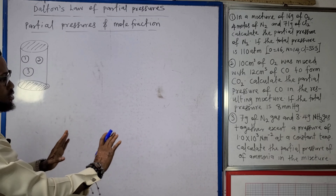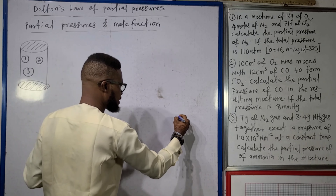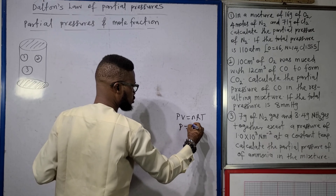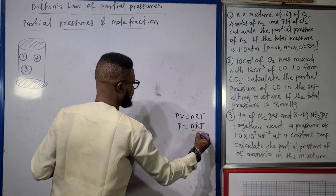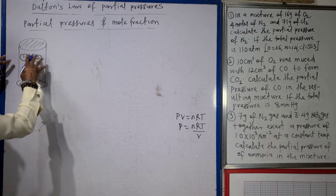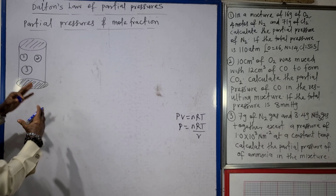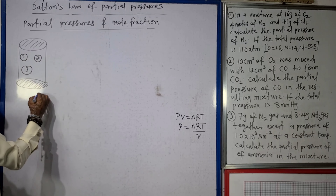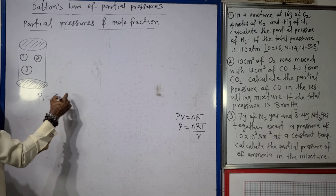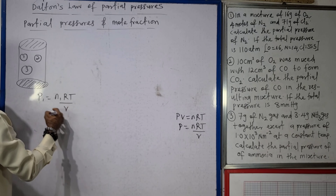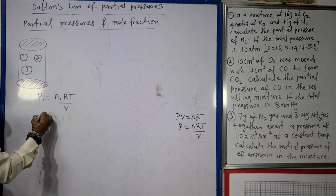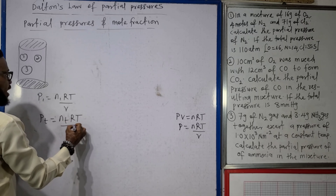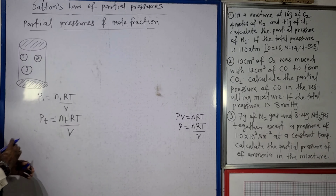The ideal gas equation is pV = nRT, and therefore pressure = nRT/V. Since the gases in the mixture behave independently, for gas 1: P₁ = n₁RT/V. And the total pressure PT = nT × RT/V.